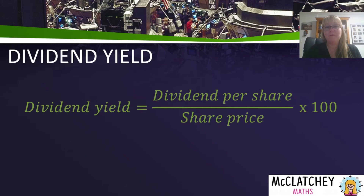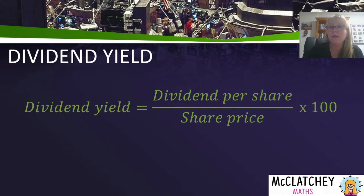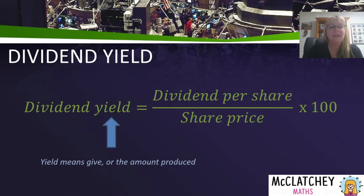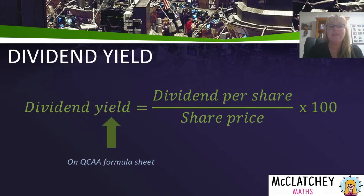Now let's look at how shareholders or potential shareholders analyze companies to decide if an investment is worthwhile. Our first measure is called dividend yield — it's the dividend received per share divided by the share price, times 100. This tells us what percentage of our share price is actually paying us a profit. Yield means the amount produced, so we're looking at how much the dividend is making us a return on our investment. This formula is on your QCAA formula sheet if you're in Queensland, so you don't need to memorize it.